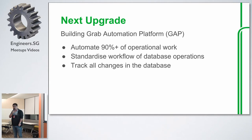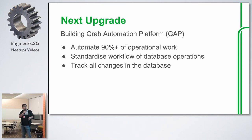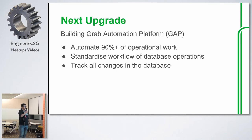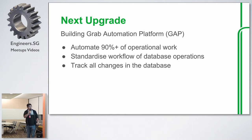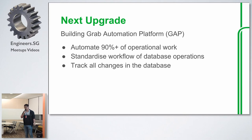The next upgrade is building their GAP Automation Platform. With more resources, the target is to automate 90% or more of operational work — the final goal is for the system to do the work itself. They are also standardizing all workflows for database operations and tracking all database changes so they can trace back what caused issues.